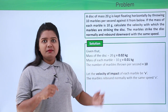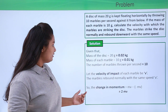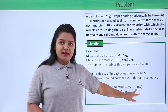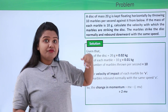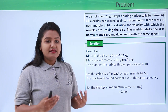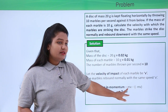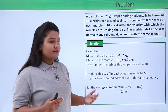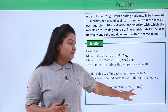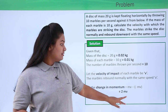It is given that the marbles rebound normally, that is in the downward direction, with the same velocity. So the change in momentum of each marble is given by mv minus (-mv). Since the marbles move in the opposite direction while returning back, we have taken the return velocity to be negative, making that momentum negative. The final momentum is -mv and the initial momentum is mv. So the total change in momentum for one marble is mv - (-mv), which gives 2mv.